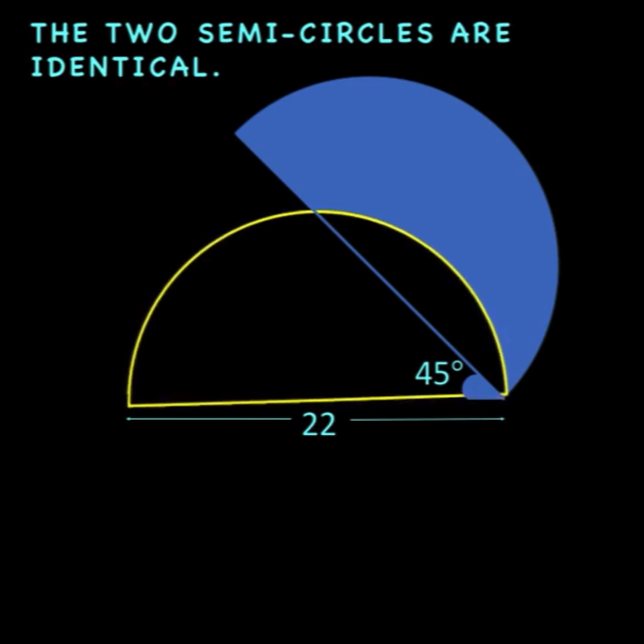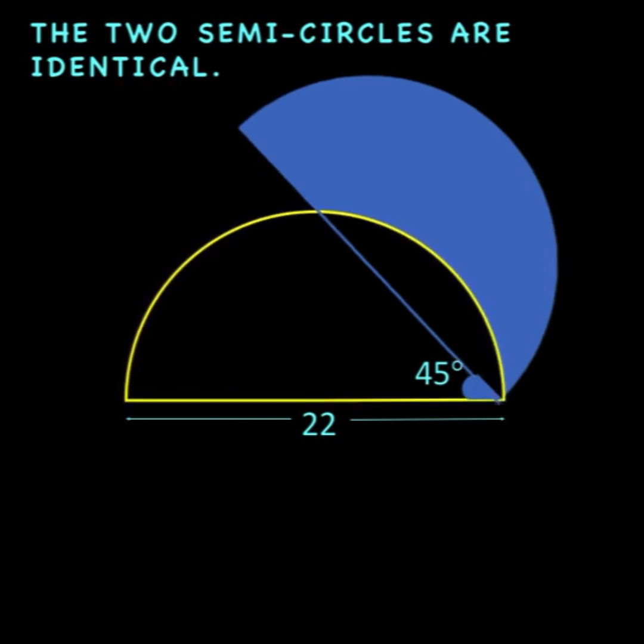We have this yellow semicircle and this blue semicircle. It is given that the diameter of the yellow semicircle is 22 and the angle formed here is 45 degrees. We would like to find what is the area of this blue shaded region.